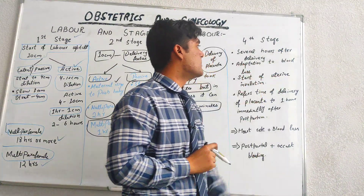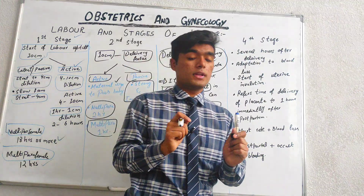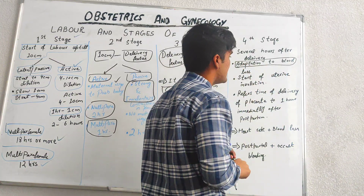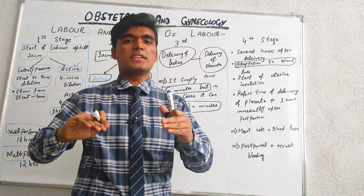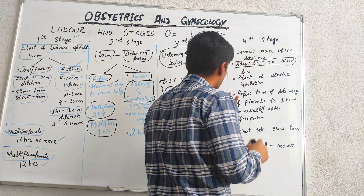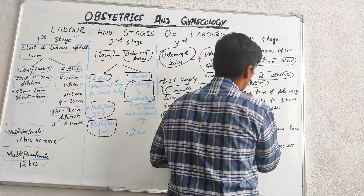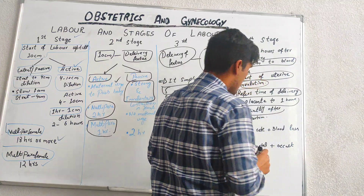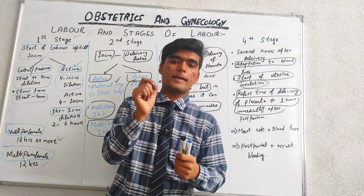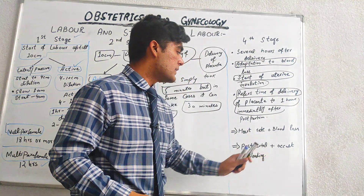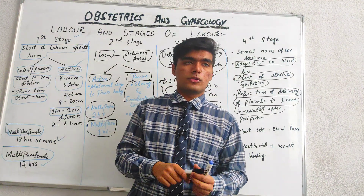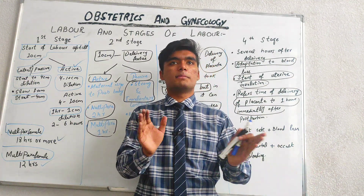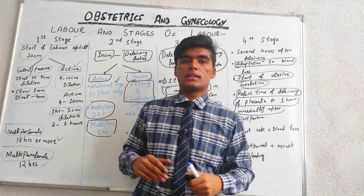The fourth stage of labour is basically several hours after delivery. We check adaptation to blood loss and monitor for any reactions or anomalies. From delivery through uterine involution, and one hour after delivery of the placenta, we check heart rate, blood pressure, and assess for any excessive bleeding or postpartum hemorrhage. We check these conditions to determine whether the patient is normal, and if normal, the patient will be discharged after some time.